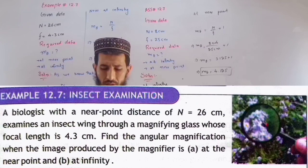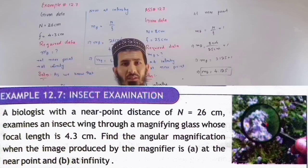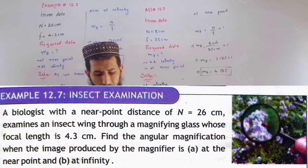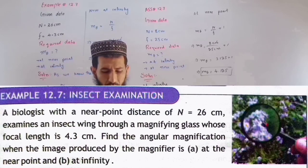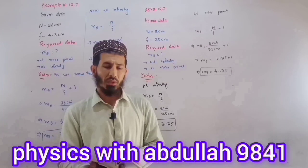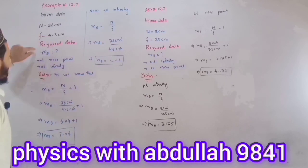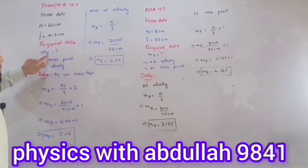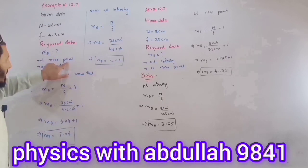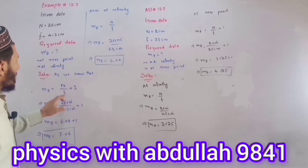The wing parameters are given: n equal to 6.4 cm, 16.7, and 6.9 cm. The magnifying glass focal length is 4.3 cm, the near point distance is 25 cm. Angular magnification is considered for both near point and infinity cases. The formula used is: m_theta equals n divided by f plus 1.